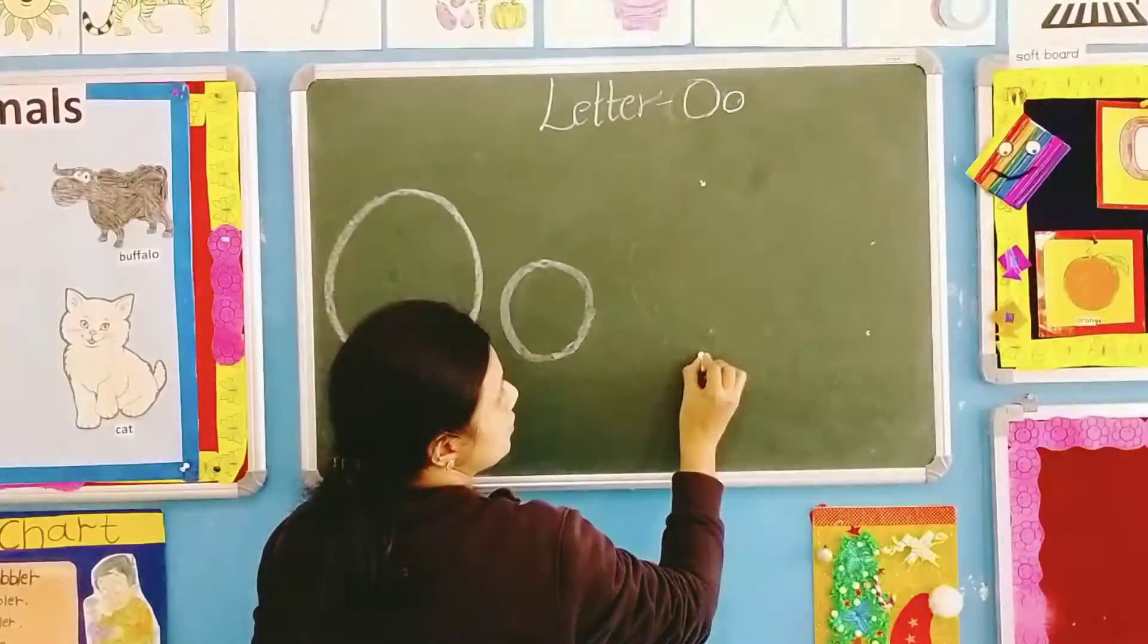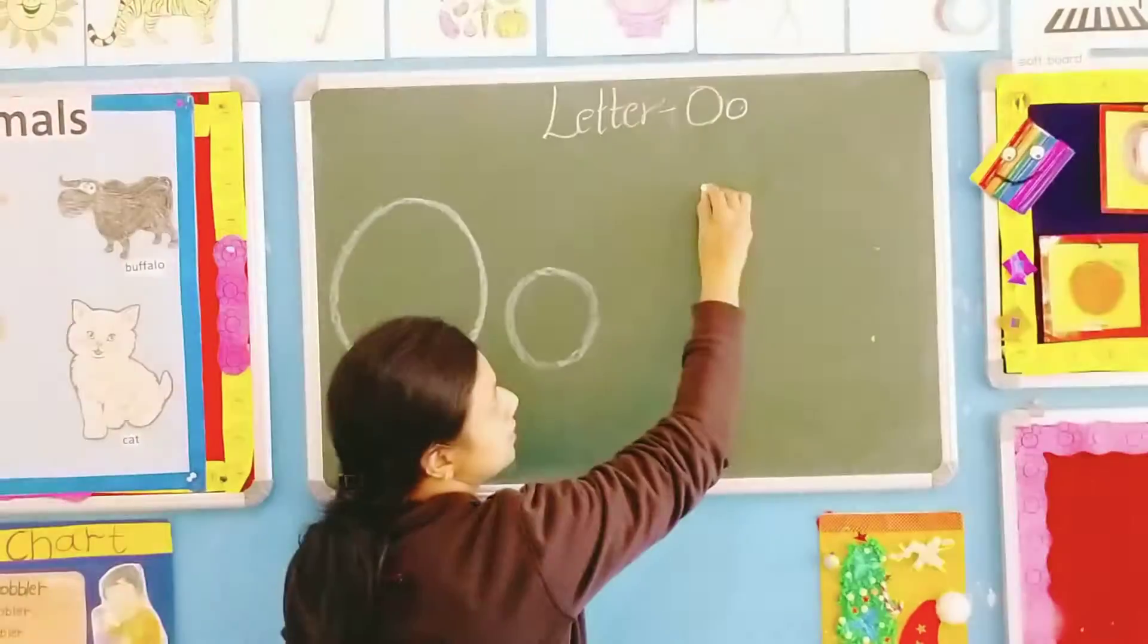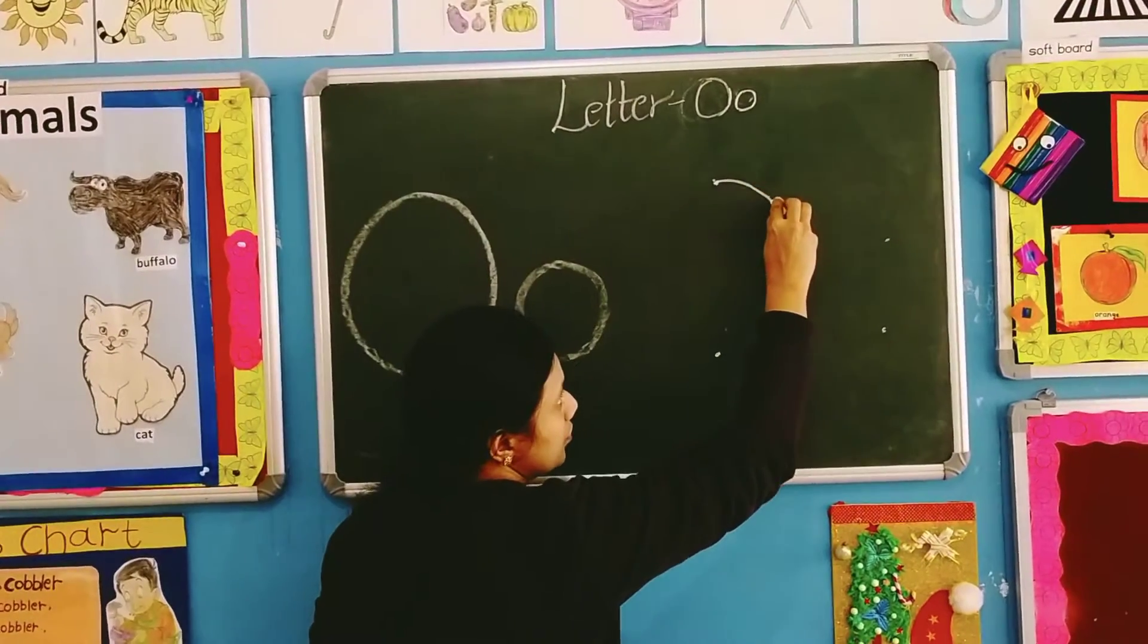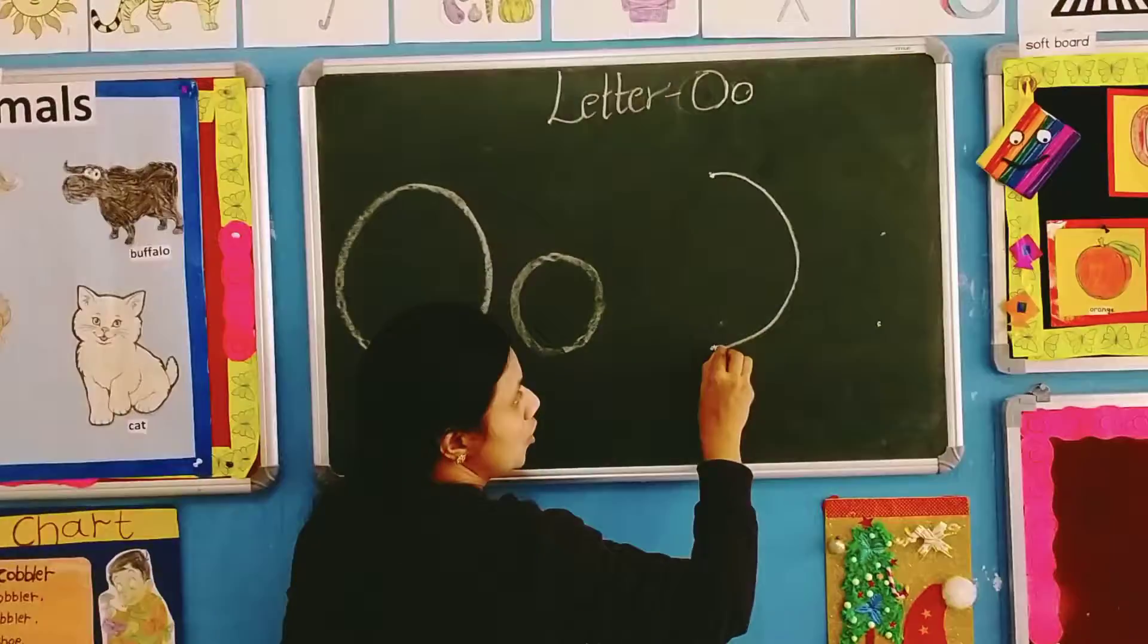Now look here. I will give you two dots. Right? Now how to write? See, starting from this, what you have to do?